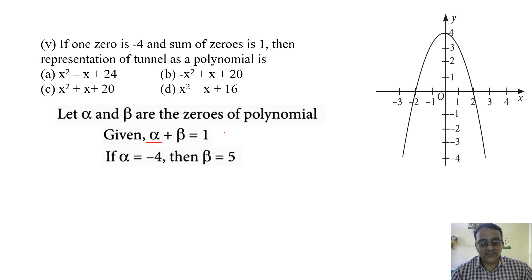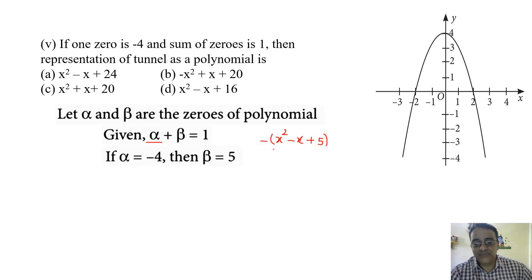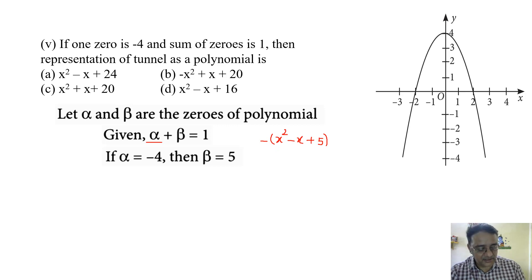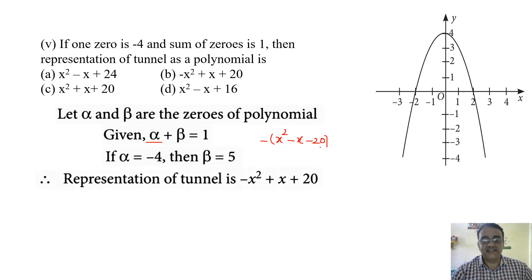The representation of the tunnel will be x squared minus sum of zeros into x plus product. Sum is 1, product is minus 4 into 5 equals minus 20. Since this is a downward parabola, we multiply by minus 1. So we get minus x squared plus x plus 20. The correct option is option B.